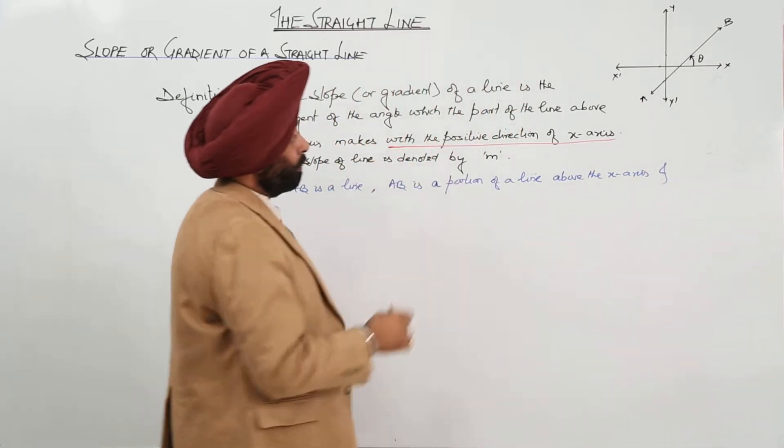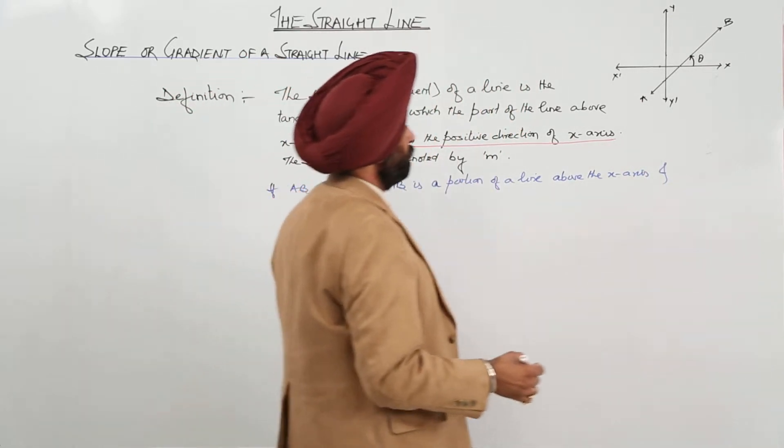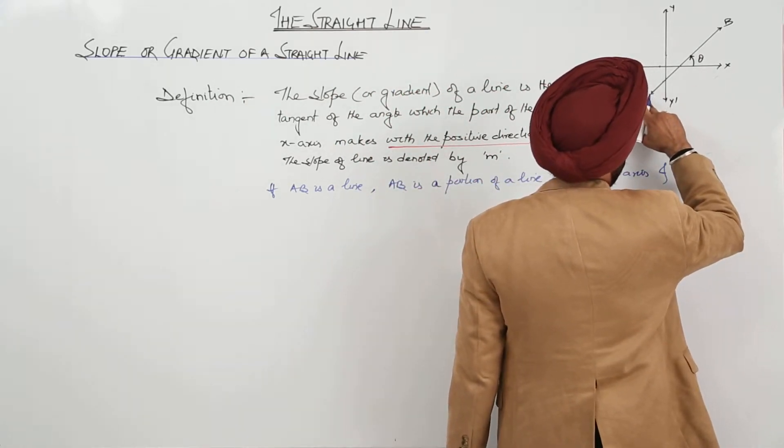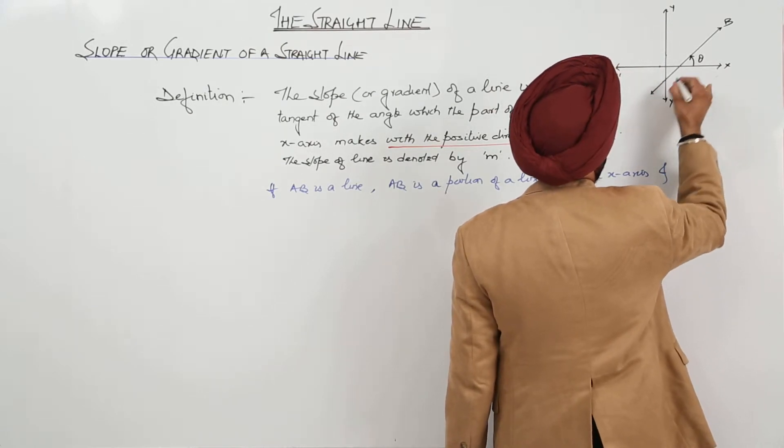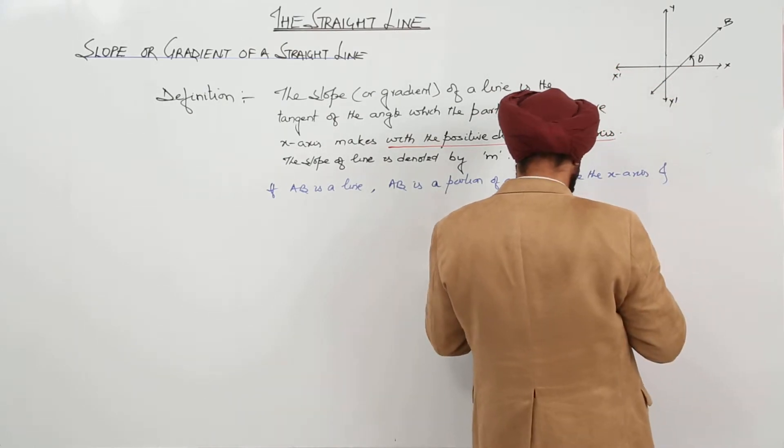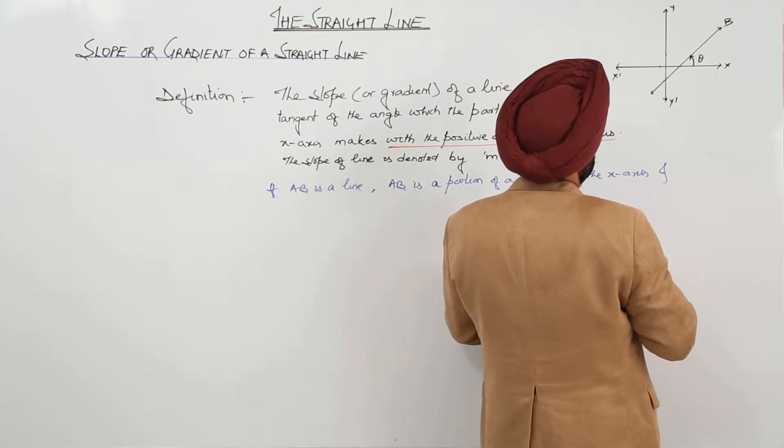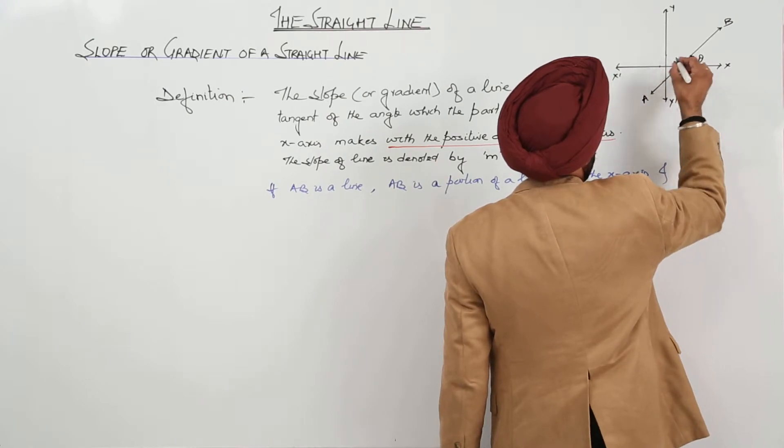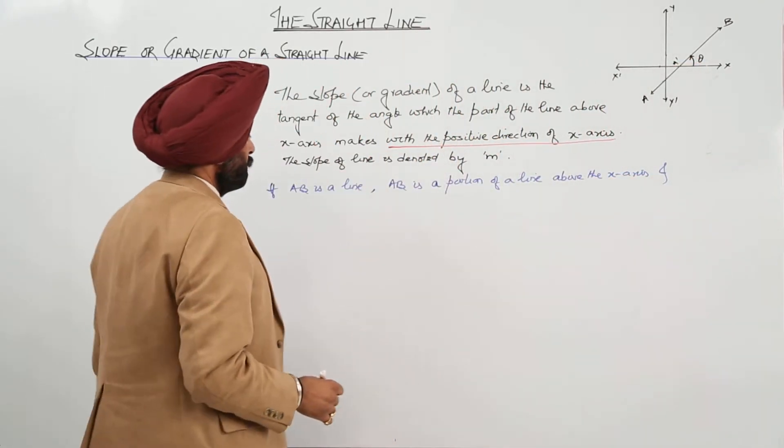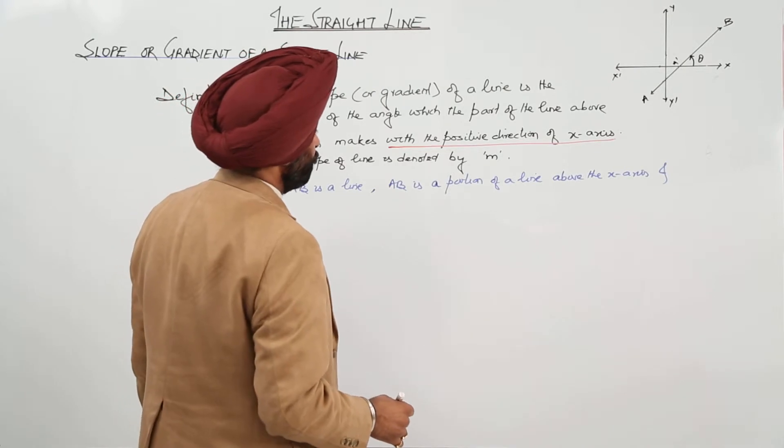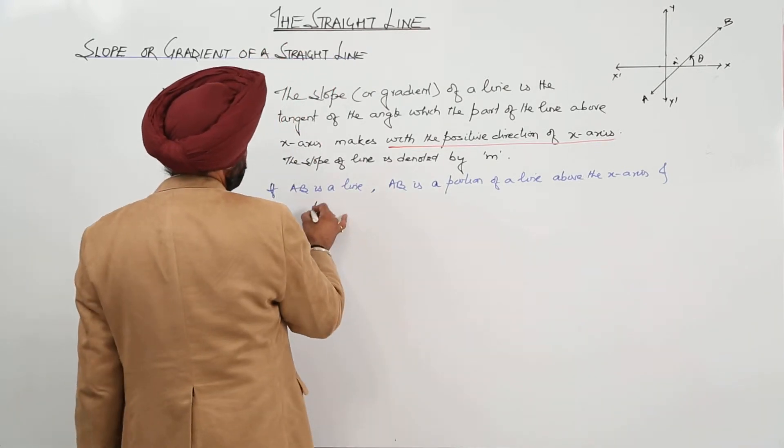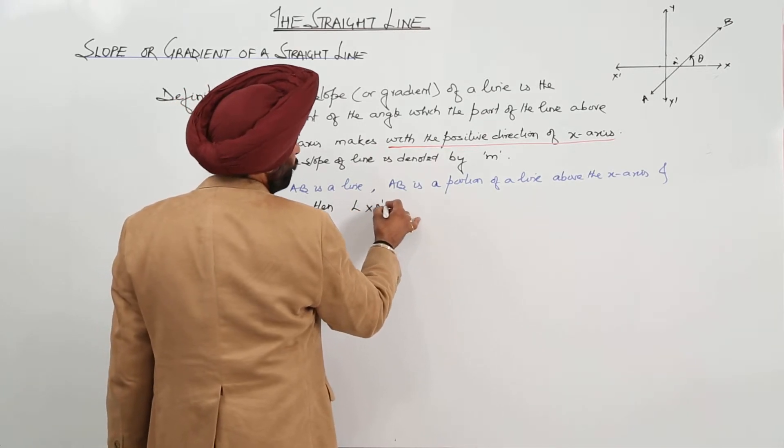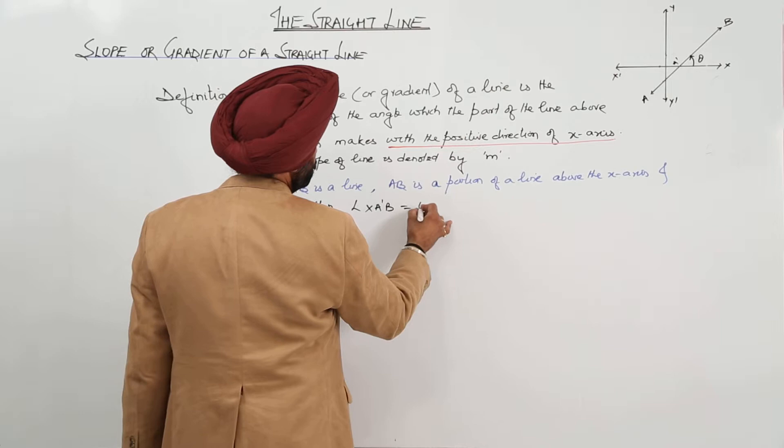And in this part, we are having, suppose the point is... Let this point be A dash. AB is a portion of a line above the x-axis, then angle x A dash B is equal to theta.